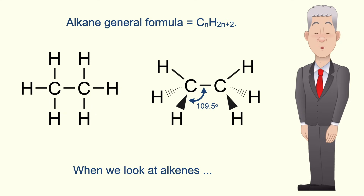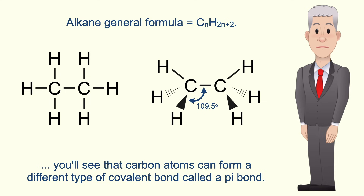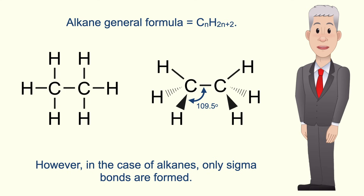When we look at alkenes you'll see that carbon atoms can form a different type of covalent bond called a pi bond. However, in the case of alkanes only sigma bonds are formed.